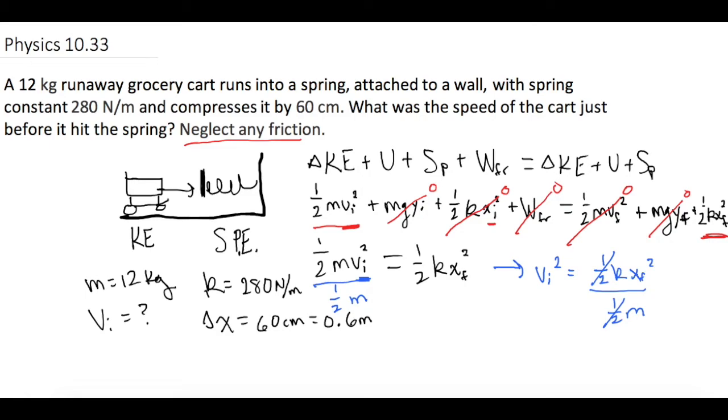Let's get rid of that squared on both sides. If we square root both sides, that leaves us with our final equation of velocity initial equals the square root of K X final squared over M. If we plug in the numbers, we'll get our answer. You may look at that and say, what's the final squared under a square root? Isn't that kind of redundant?